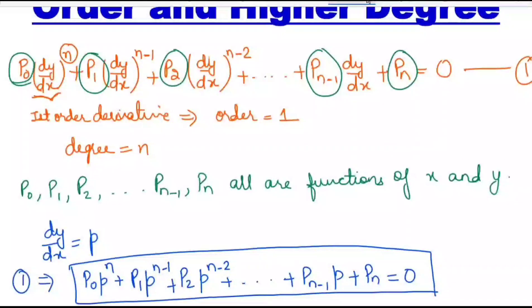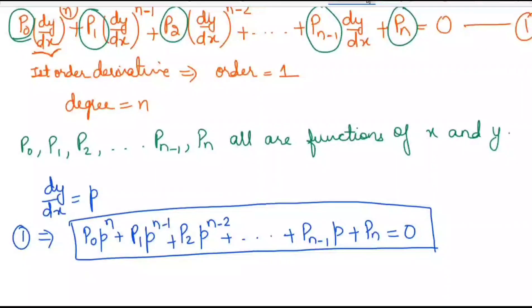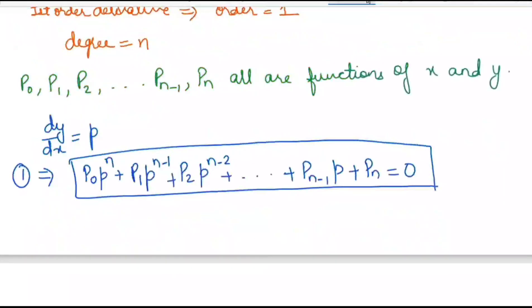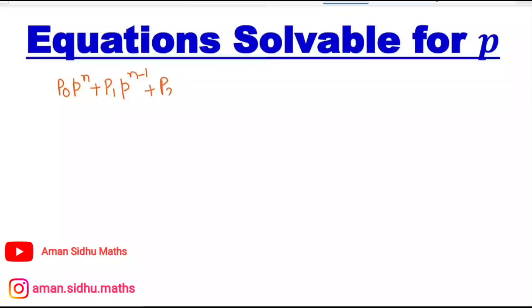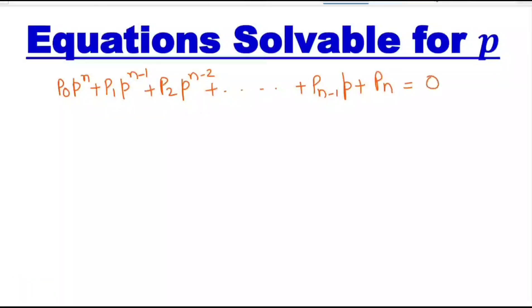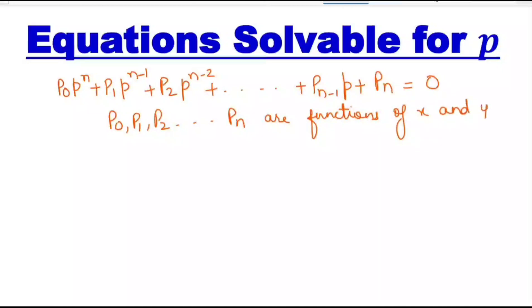To solve these kinds of equations we have four methods: equations solvable for P, solvable for x, solvable for y, and Clairaut's form. Firstly, we will discuss equations solvable for P. If we have a differential equation of the form P₀, where P₀, P₁, P₂, and Pₙ are all functions of x and y, and small p equals dy/dx.